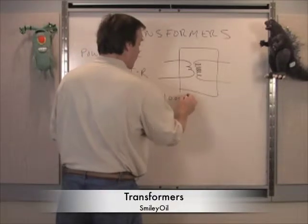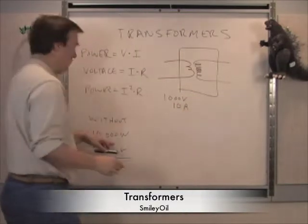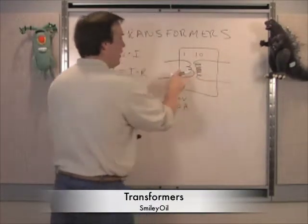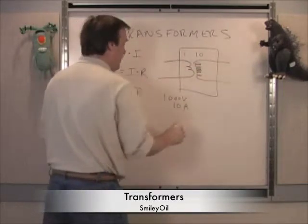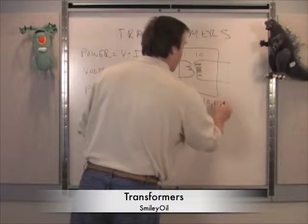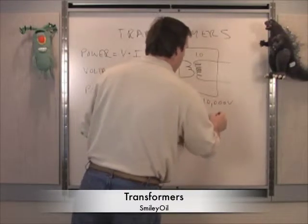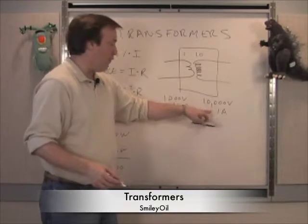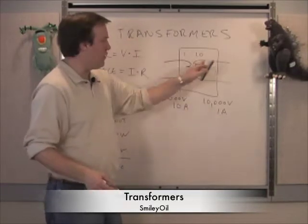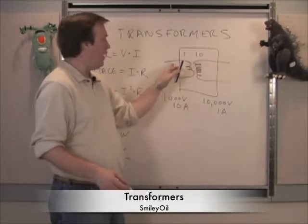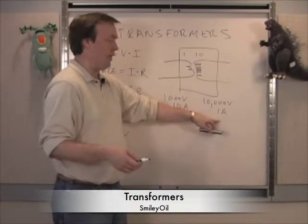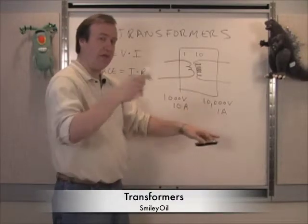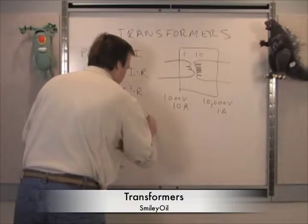Let's say on the input side we have 1,000 volts and 10 amps — 10,000 watts. If we have 10 windings on the input side to 1 winding on the output side, we will increase the voltage to 10,000 volts and drop the current to 1 amp, because power through a transformer is constant. You're simply changing your voltage and amperage, and this is going to make a huge difference in the transmission of power.